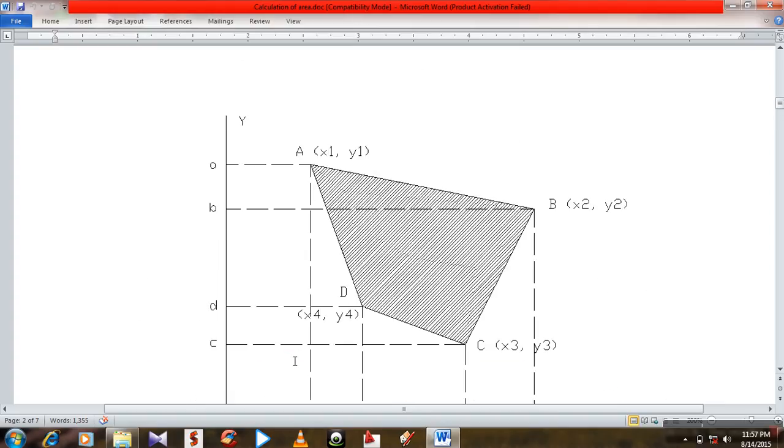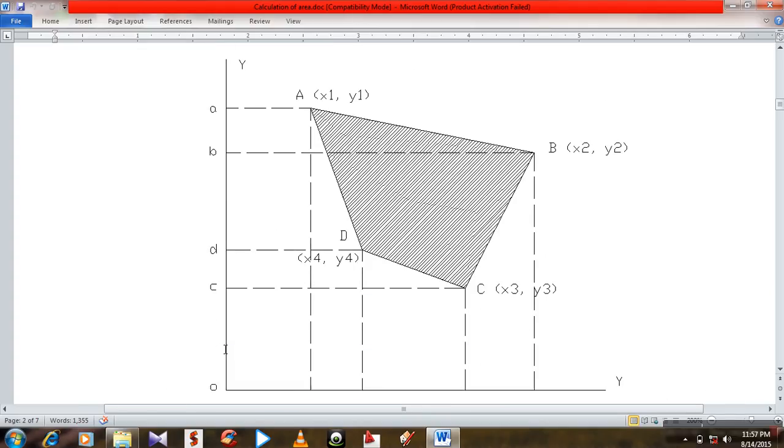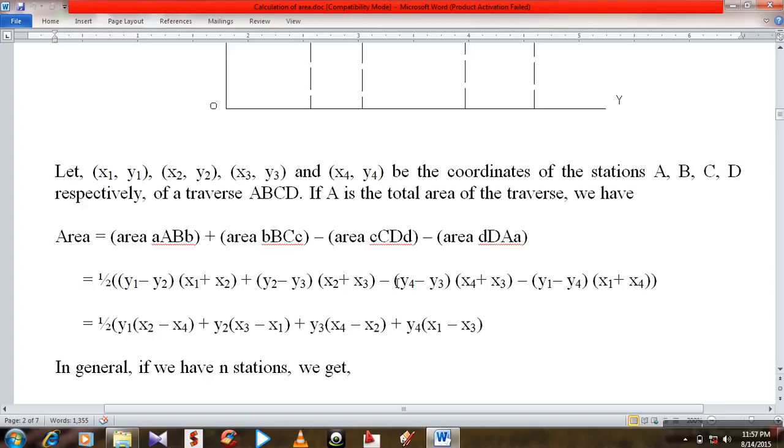Then the total area of the traverse we have area ABB plus area BBC, that means area ABB plus area BBC, plus area CDD and CCA.